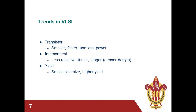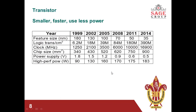Yield tells us about the number of good dies on a single silicon wafer. Good dies divided by total dies gives the yield. A smaller die size gives a higher yield. Yield basically tells about designer efficiency in obtaining good quality chips. This graph shows semiconductor industry scaling: in 1999 the chip size was 180 nm, and scaling down to 2014, Core i3 and i5 reached 35 nm, with logic transistors per cm² growing from 6.2 million in 1999 to 18 million in 2002 and 39 million in 2005.